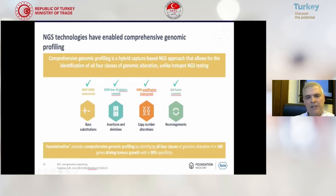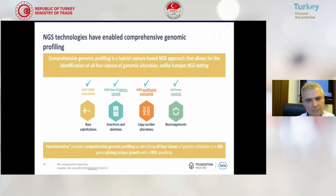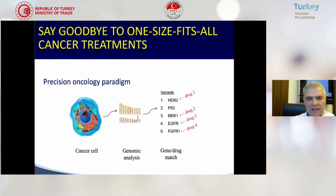NGS technologies have enabled comprehensive genomic profiling. The advantage is that this can be done very quickly. For example, an NGS test result can have a turnaround time of around one to two weeks, which is quite cheap compared to previous methods. So are we ready to say goodbye to one-size-fits-all cancer treatments like chemotherapy, radiotherapy, or hormones? Maybe yes, because the precision oncology paradigm is now shifting our understanding of cancer treatments completely.